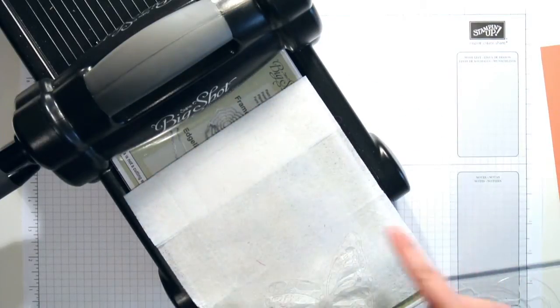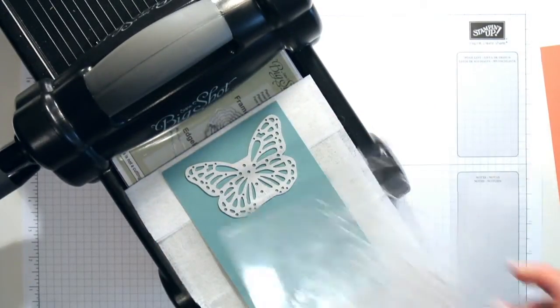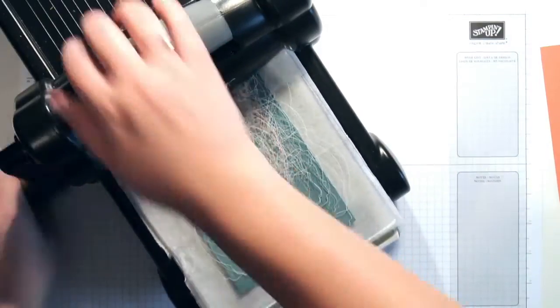So I've got my clear plate, my dryer sheet, my cardstock, and then my butterfly. Let's run that through the Big Shot.